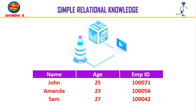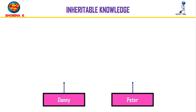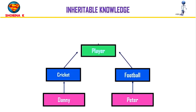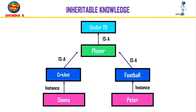Moving on to inheritable knowledge: all data must be stored in a hierarchy of classes arranged in a generalized or hierarchical manner. This approach contains inheritable knowledge which shows a relationship between instance and class, called the instance relation. Objects and values are represented in boxed nodes. For example, we have two players, Danny and Peter, who play different games — cricket and football — but both are known as players and both play for under-19 teams. The relationship of Danny-cricket and Peter-football is an instance, while cricket and football relate to player and under-19 through inheritance.